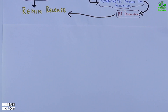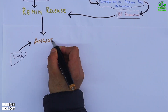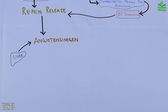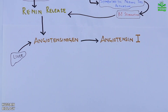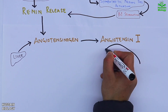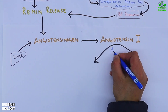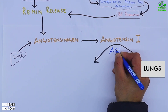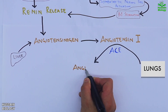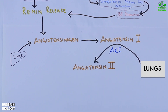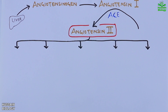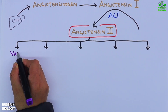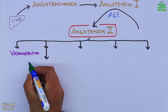From the liver we get angiotensinogen, which is acted upon by activated renin and cleaved into Angiotensin 1. Then Angiotensin 1 is acted upon by the ACE enzyme coming from the lungs, and we get Angiotensin 2.